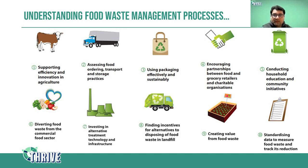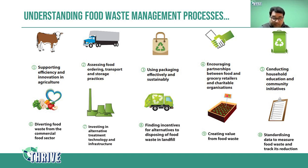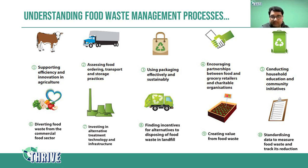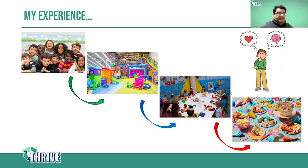This slide looks at how food wastage can be reduced. First, we can have efficiency and innovation at the agriculture level itself. We can improve food ordering, transport, and storage practices — such as cold storage — to extend the life of produce. Effective and sustainable packaging can also increase shelf life. Partnerships between food and grocery retailers and other organizations can help tackle this collectively, and data standardization for measuring food waste can help everyone involved.